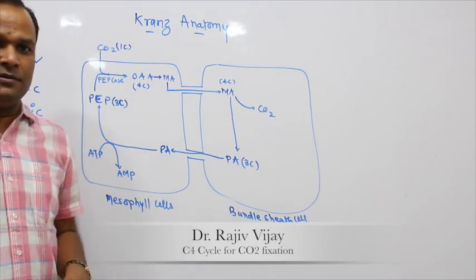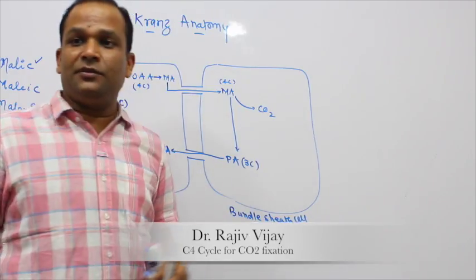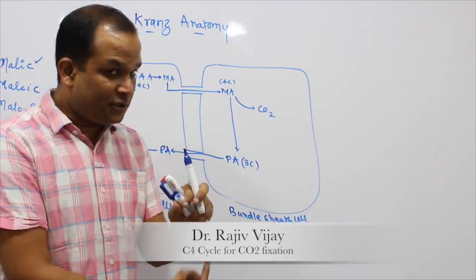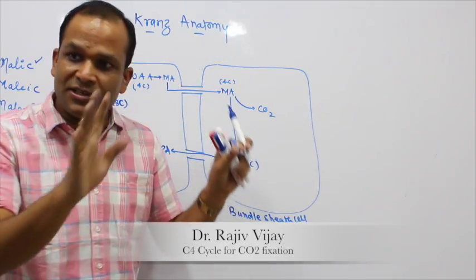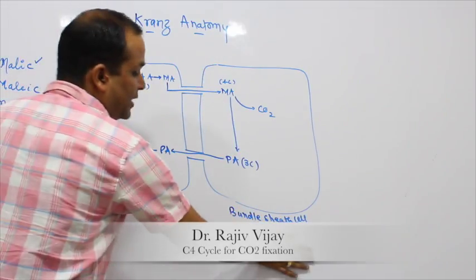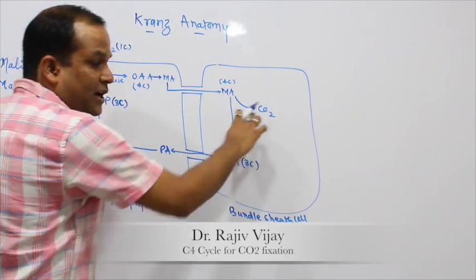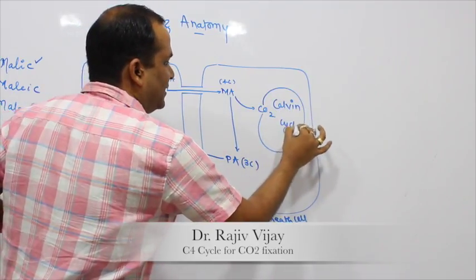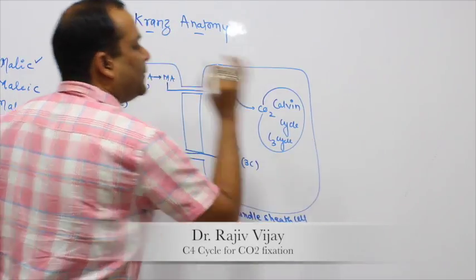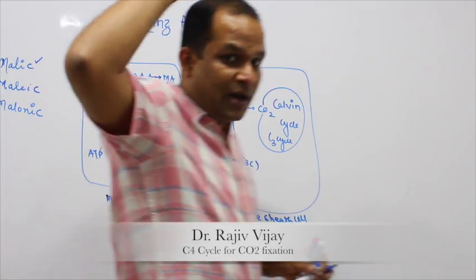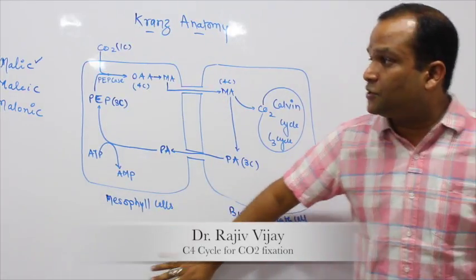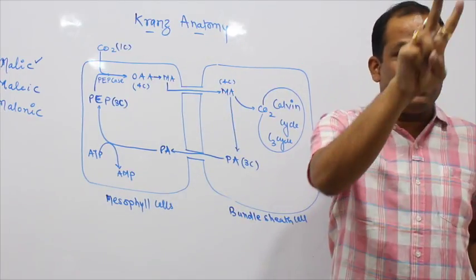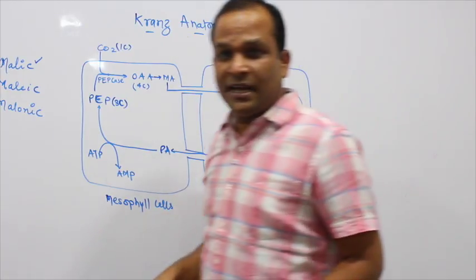The first cell is the mesophyll cell, and the second cell formed is known as the bundle sheath cell. It is called bundle sheath because in the leaf there is a vascular bundle, and these cells surround that vascular bundle in the form of a sheath. In Kranz anatomy, instead of one type of cell, the plant possesses two types of cells: mesophyll and bundle sheath.